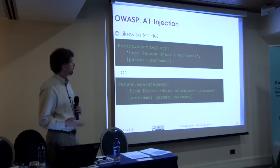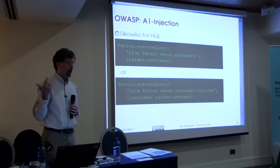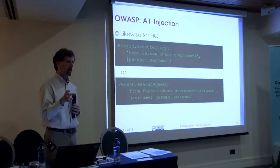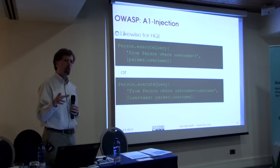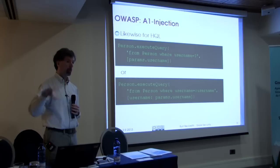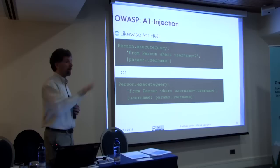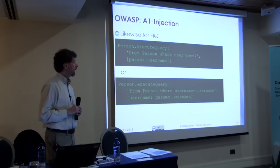HQL has that same problem. You can concatenate strings, but you shouldn't — use question mark placeholders for HQL too. In Grails, query preference order is: dynamic finders, then criteria queries, then the new 'where' queries in 2.0. Dynamic finders and where queries get turned into criteria queries, and criteria queries in Hibernate always use prepared statements. You only have to worry about SQL injection in Grails when doing dynamic HQL or raw SQL.